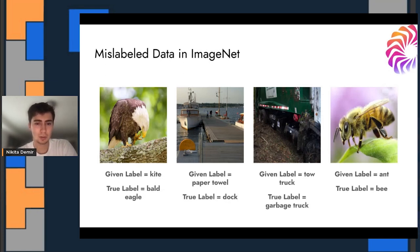Similarly, in ImageNet, super popular canonical dataset in computer vision, rife with tons of different kinds of data errors. On the left, it was given a label of kite but looks very clearly to be a bald eagle, paper towel that should be dock. And we'll get back to this one a little bit more later. It was labeled tow truck, whereas it looks to be a garbage truck, although it's hard to see because it's zoomed in. And then ant labeled as B, or B labeled as ant.